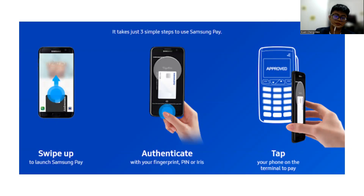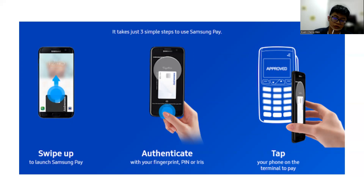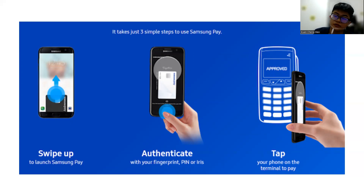First, you just swipe up to launch the Samsung Pay. And then you just authenticate with your fingerprint or the password PIN. And then you just tap your phone on the terminal to make your payment. So it's very easy, right? You don't need to take out your wallet or take out the card. The more traditional way is you need to take out the wallet and give cash to the counter, and then they will give you the change — like if they charge you $22.50 and you pay $50, they need to give you the change. But now, by Fintech, no need.